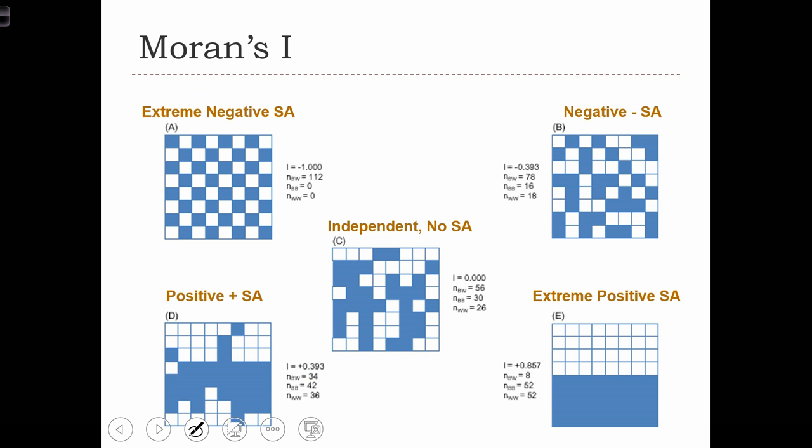Here are some cases of some simple maps and their respective Moran's I values. So first of all, let's start with the random case, independent. So here the value of one location doesn't help us understand what the nearby values will be. That's why we're calling this independent, but another way of what I just said is that this is a random map pattern.